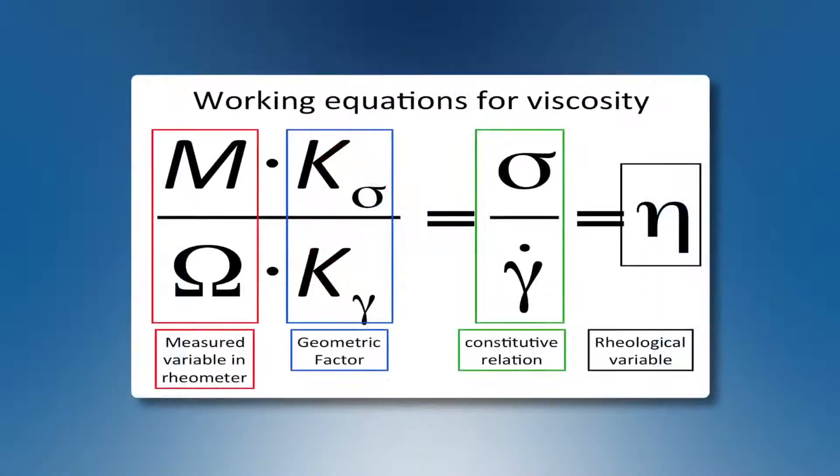A rheometer measures stress by means of torque and strain by means of displacement or displacement rate. So we can measure torque and displacement velocity. And we have geometric factors, geometric constants, to translate the torque into stress and to translate the velocity into strain rate.